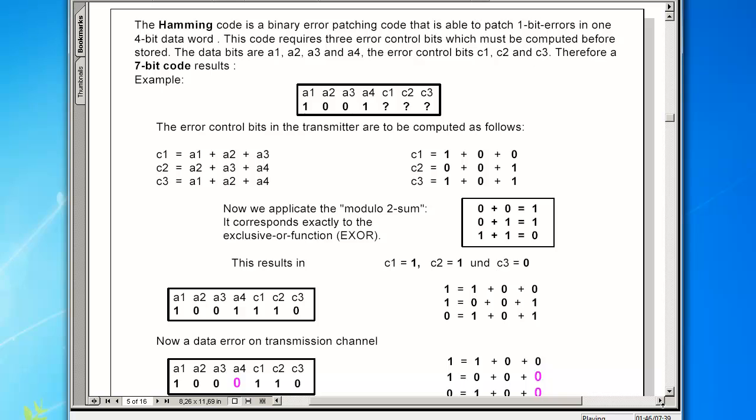Individual bit errors can be discovered and corrected by the Hamming code with 100% certainty. If several bits are transmitted or read defectively, this code is of no use.